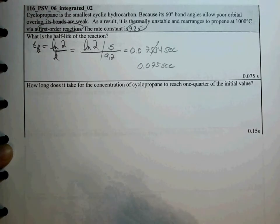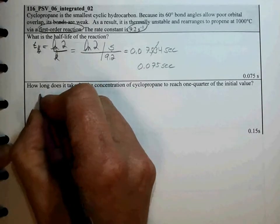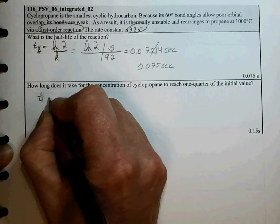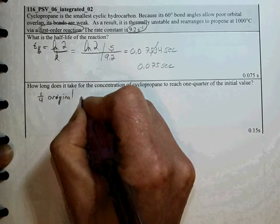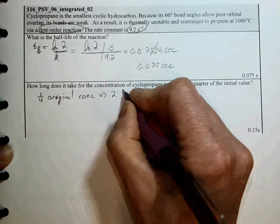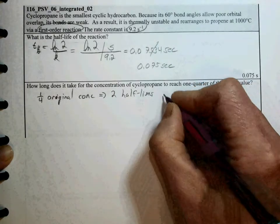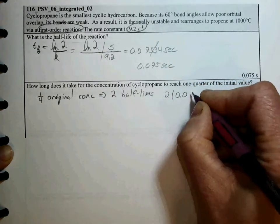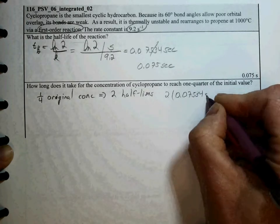So now that we have our half-life, we can take 1 quarter original concentration, which indicates two half-lives. So we have 2 times 0.07534 seconds.